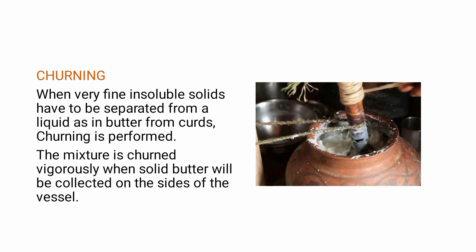Next is churning. Churning is a method of separating very fine insoluble solid particles from a liquid. This process is used to separate butter from curd. First, pour curd into a vessel, then insert a long churning tool into the curd and rotate it vigorously. After about 20 to 30 minutes, the butter will be separated from the curd and collected on the sides of the vessel. This process is called churning.